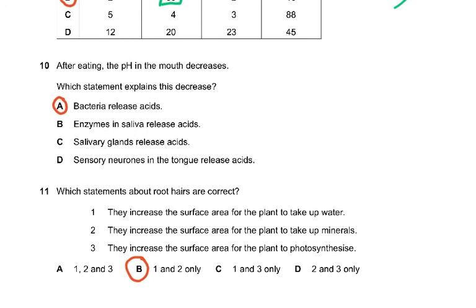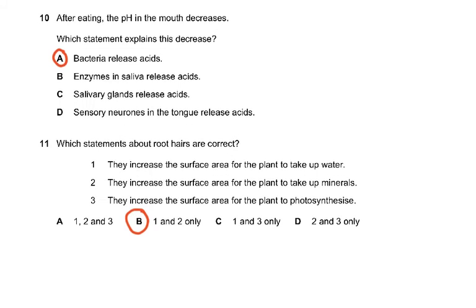Question 10: after eating, the pH in the mouth decreases. Which statement explains this? Bacteria release acids. Salivary glands do not release any acid, and enzymes in saliva — only amylase, which converts starch to maltose — release no acid. Sensory neurons also cannot release any acids. Therefore, bacteria releasing acids is the correct answer.